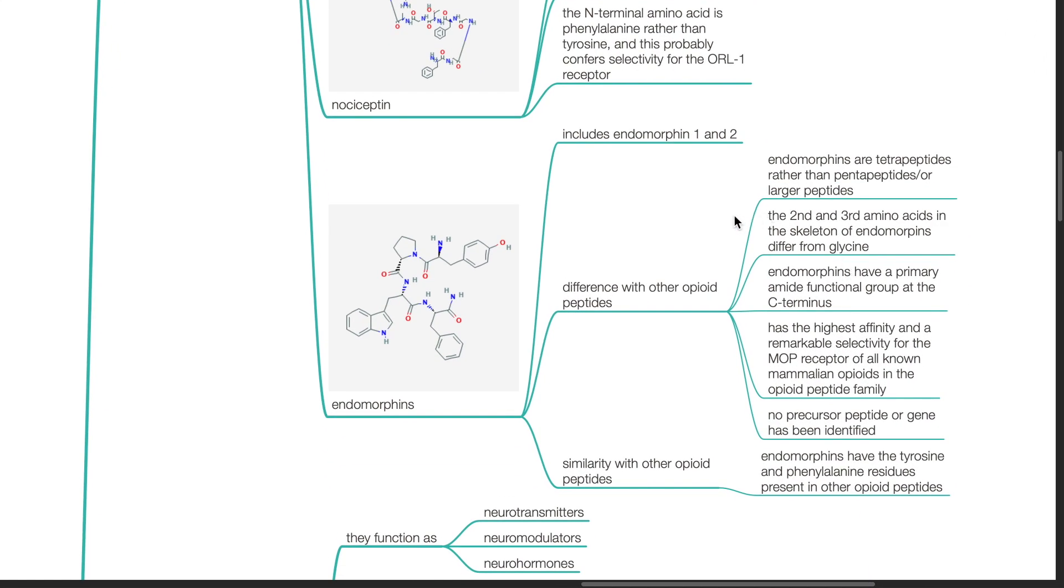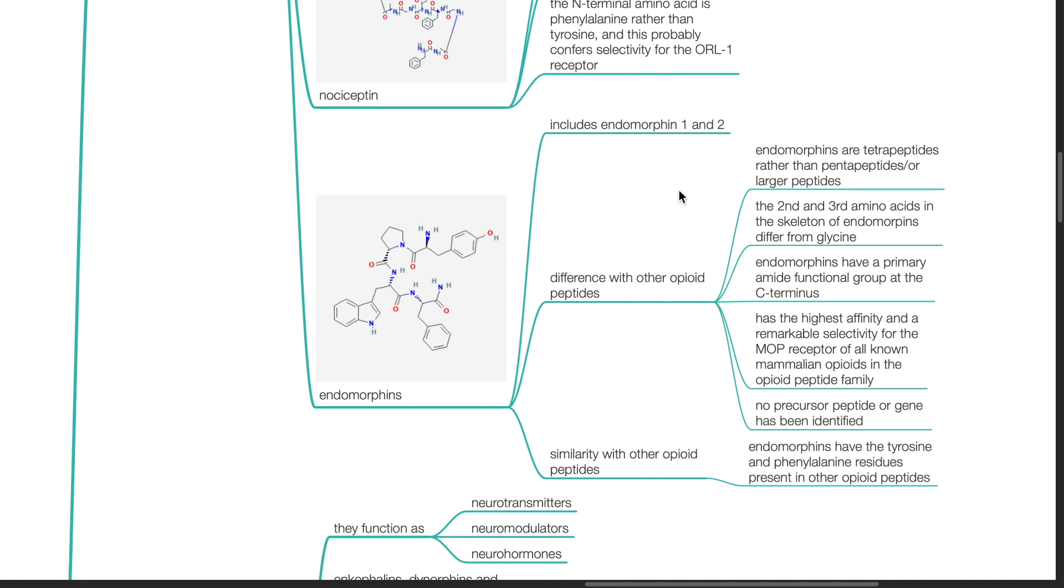The N-terminal amino acid is phenylalanine rather than tyrosine, and this probably confers selectivity for the ORL1 receptor. Endomorphins include endomorphin 1 and 2. It has several differences with other opioid peptides. Endomorphins are tetrapeptides rather than pentapeptides or larger peptides. The second and third amino acids in the skeleton of endomorphins differ from glycine. Endomorphins have a primary amide functional group at the C-terminus. Endomorphins have the highest affinity and remarkable selectivity for the MOP receptor of all known mammalian opiates in the opioid peptide family.